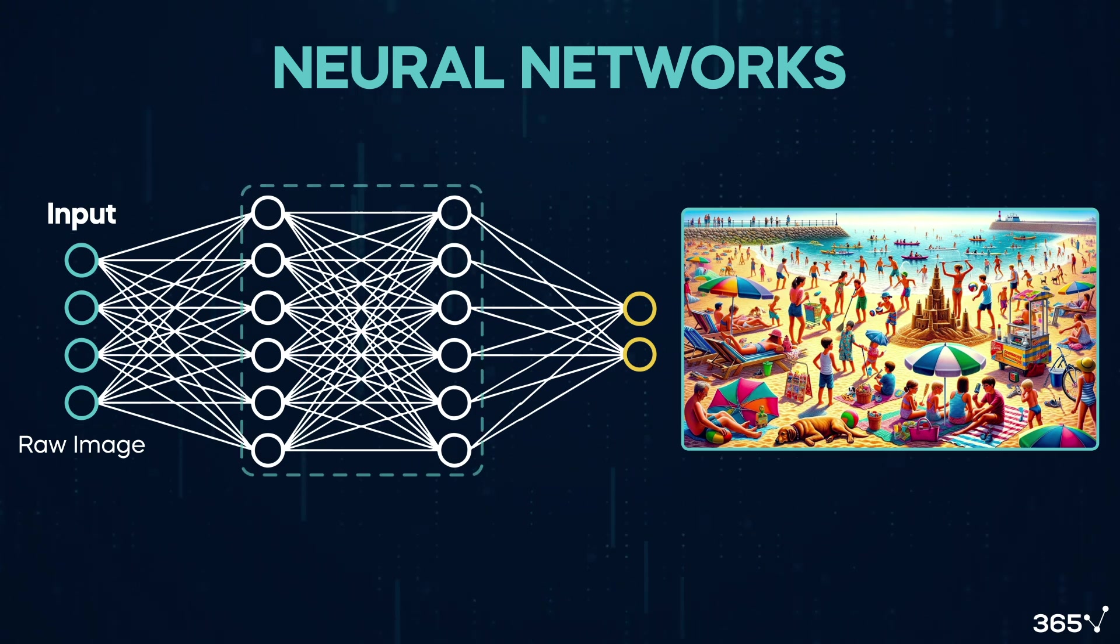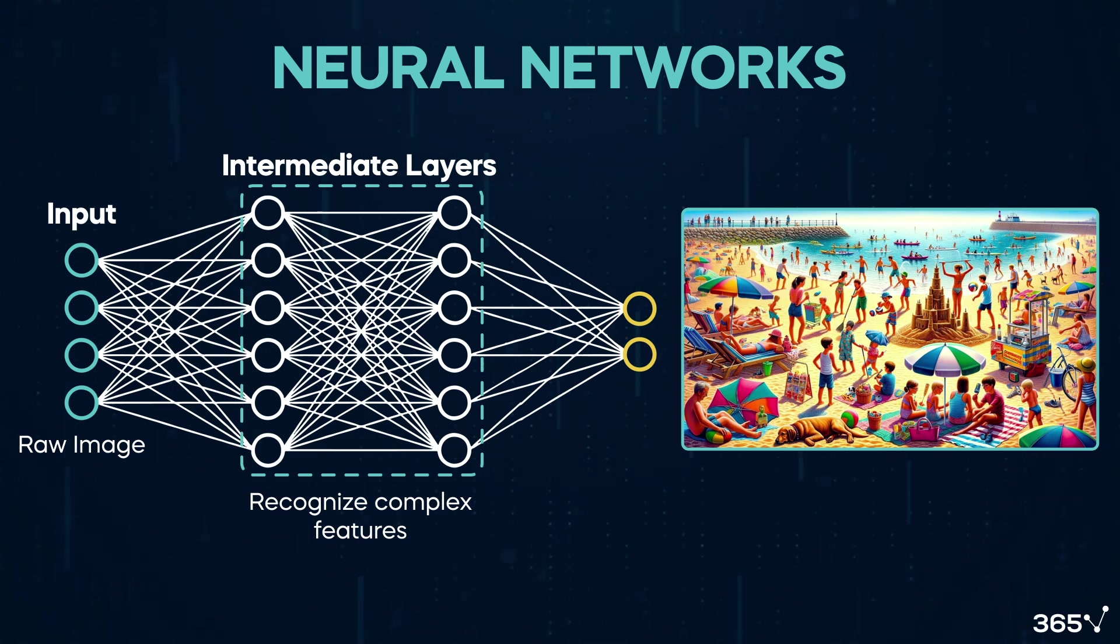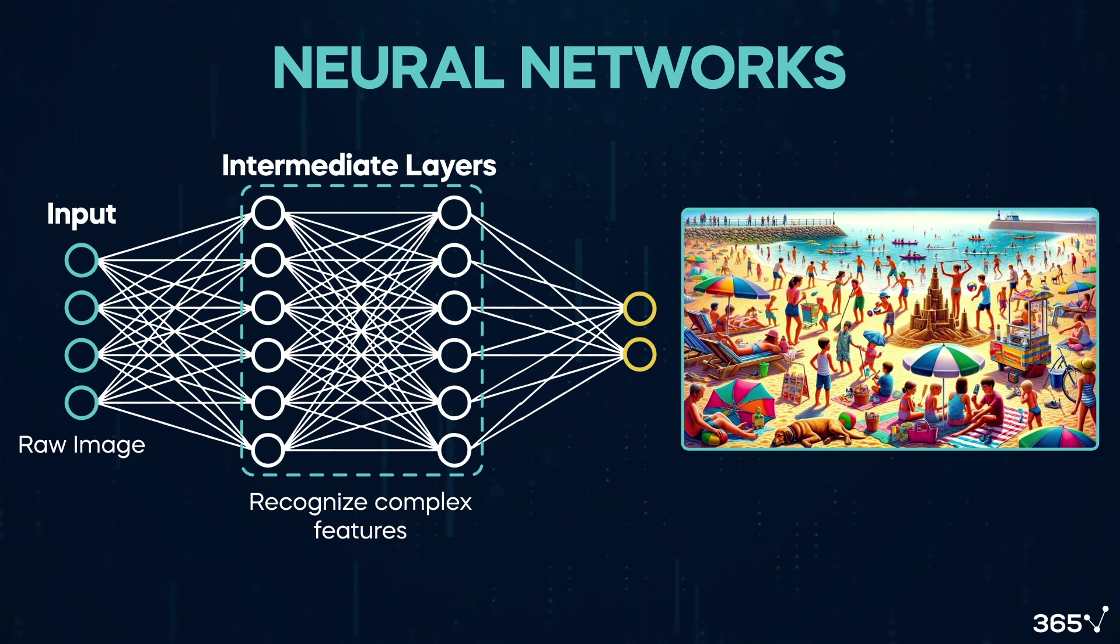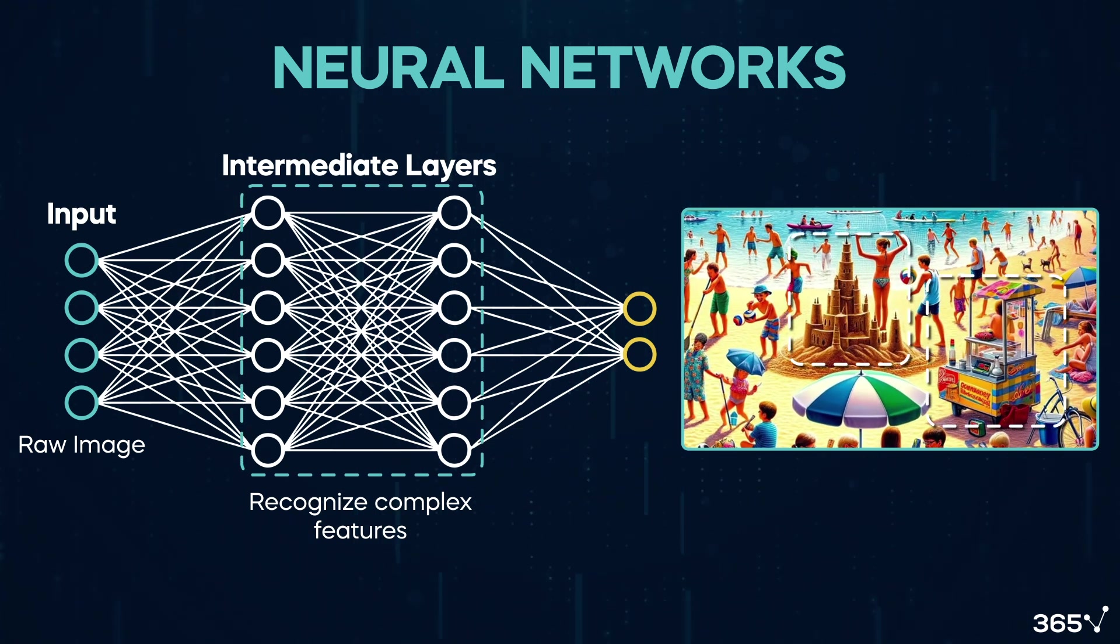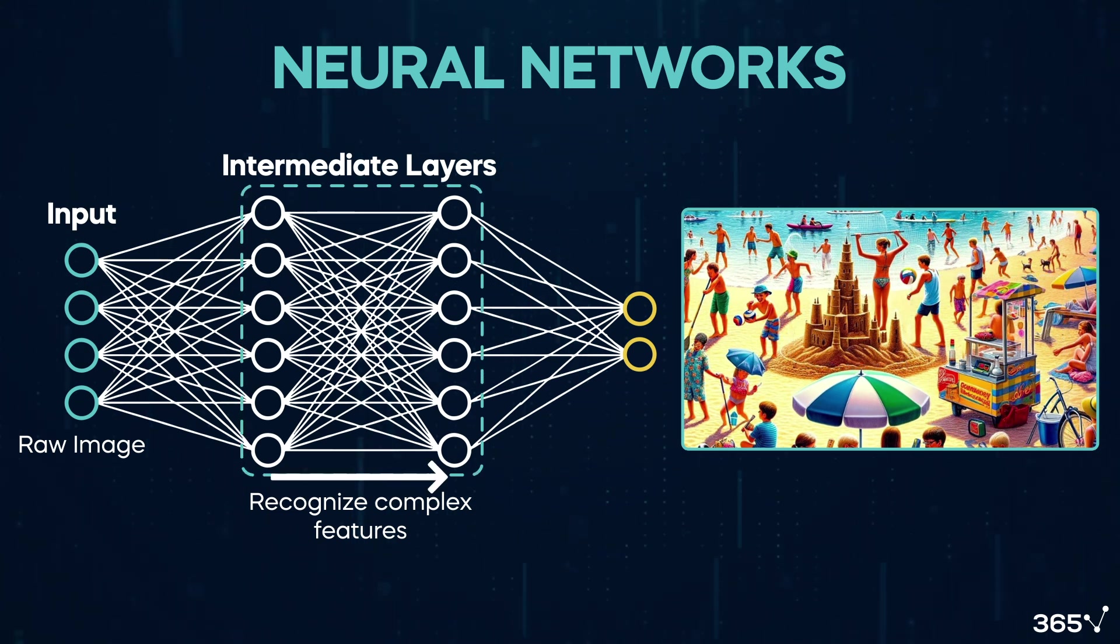Then, as the data passes through more network layers, intermediate layers start recognizing more complex features, such as shapes or specific objects. Remember how I noticed the enormous sand castle in the middle? Every intermediate layer of the neural network builds a more detailed understanding of the basic features identified by earlier layers.